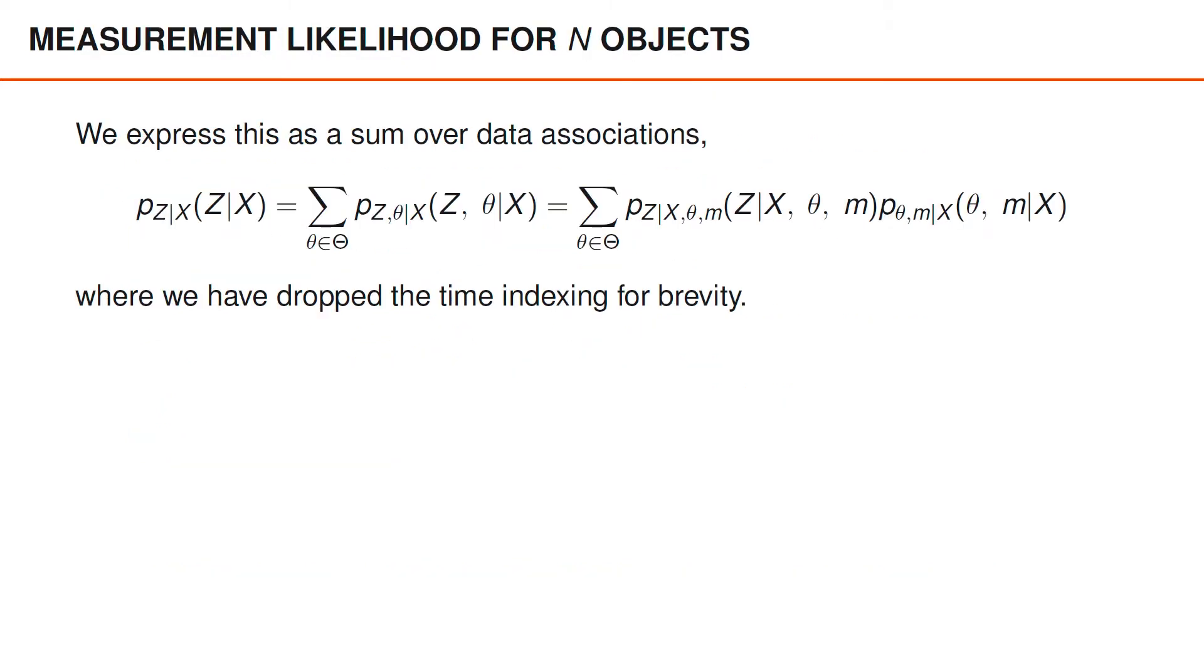In single object tracking, we saw that we could describe the measurement likelihood P of Z given X as a sum over data associations. And the same thing is true also for tracking N objects. We have a sum over the joint density of the measurements Z and the data association Theta given the object states X. And we can further describe this as a product of two densities, the measurements given the object states, the association Theta, and the number of measurements, multiplied by the density over the data association Theta and the number of measurements M given the object states.